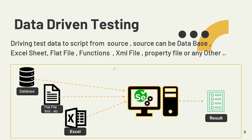This process is also known as parameterization because the script we have written doesn't have any hard-coded values. All the values are sent to the script only while executing it. Once you click Run, the system connects to your source — database, flat file, or whatever — picks the data, and sends it to the test case. Parameterization means providing test data to the script while executing the script.